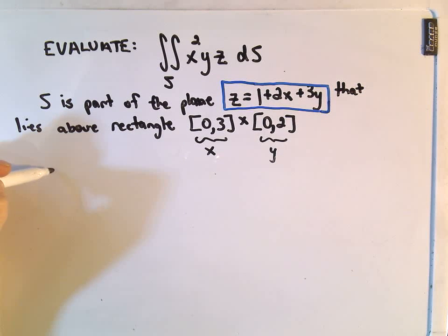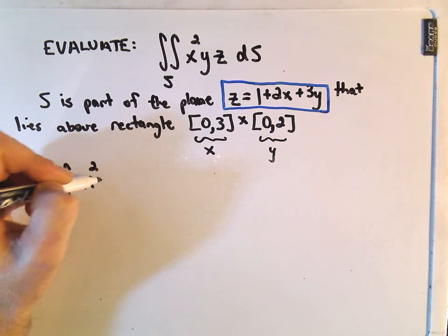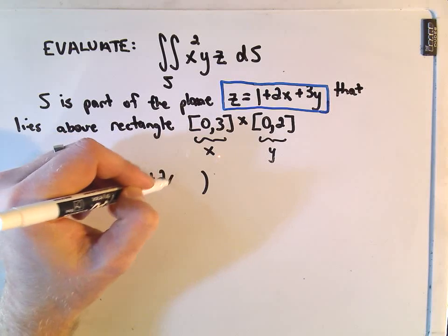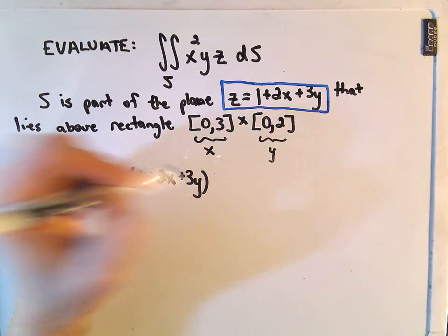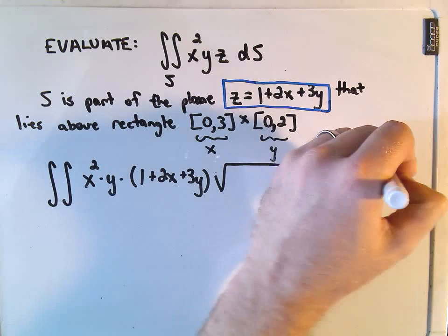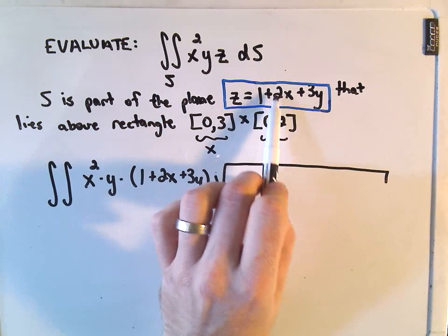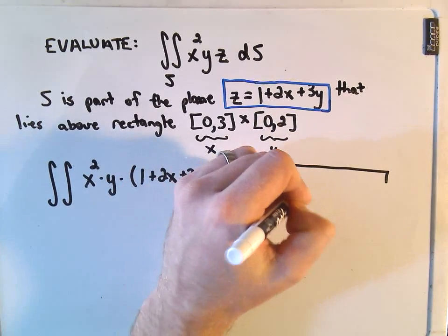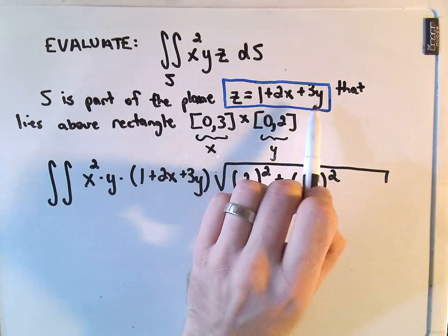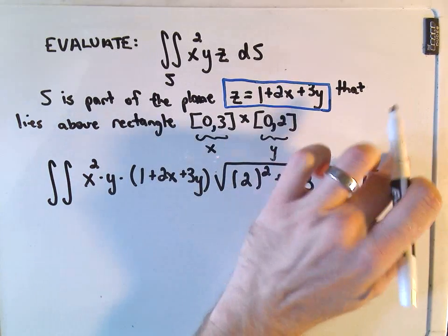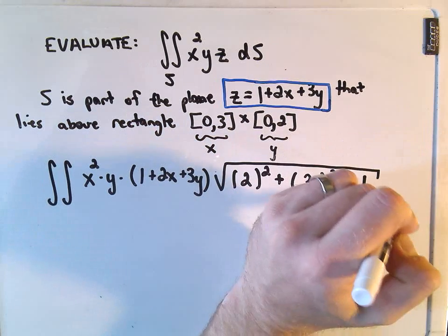To evaluate this is pretty straightforward. All we have to do is leave the x and y alone, and wherever we have a z, we plug in 1 + 2x + 3y. Then we take the partial of z with respect to x, which is 2, and square that. We take the partial of z with respect to y, which is 3, and square that. We have this plus 1, and then we can integrate with respect to x or y first.